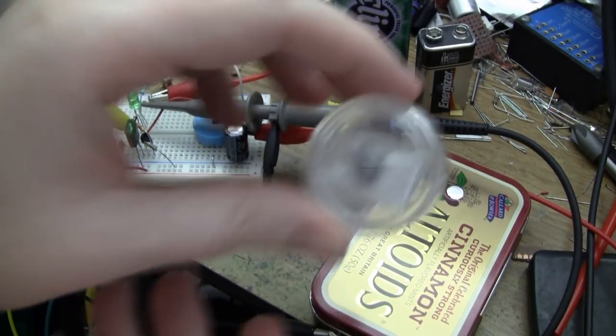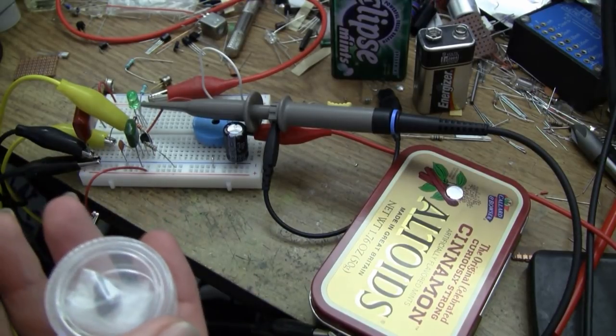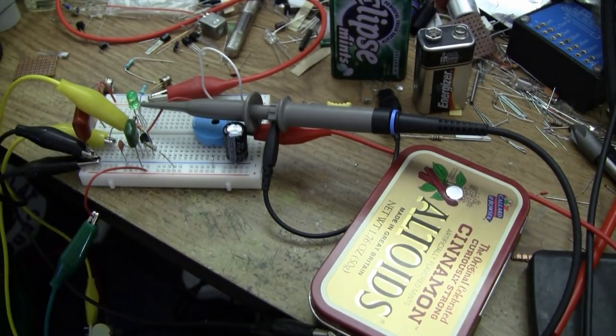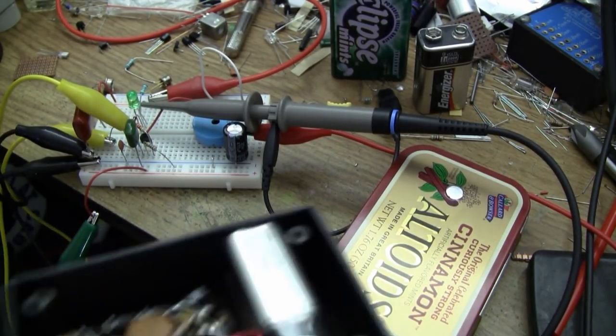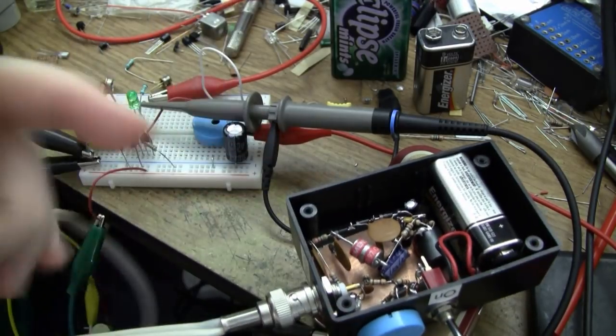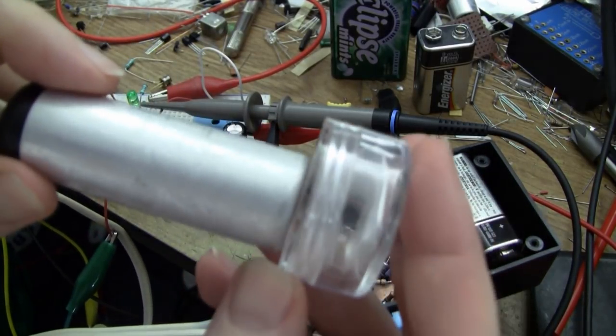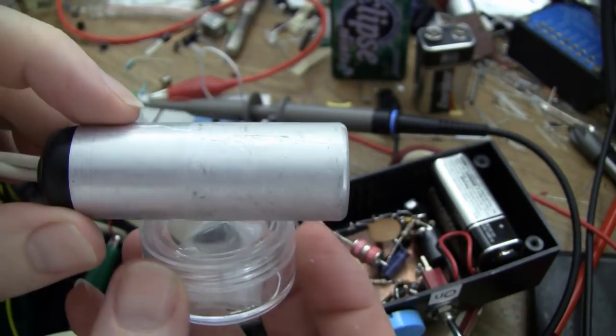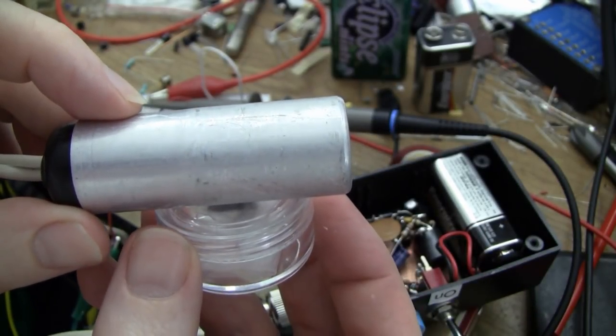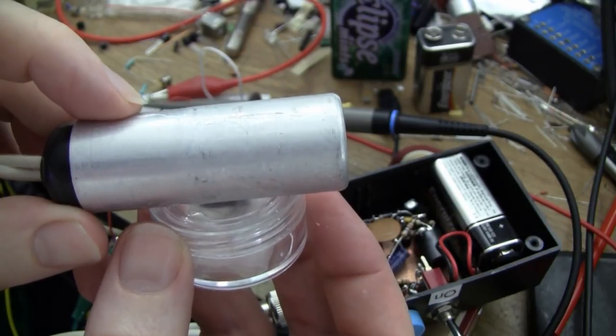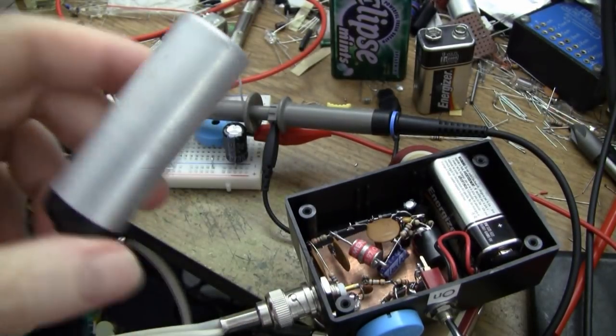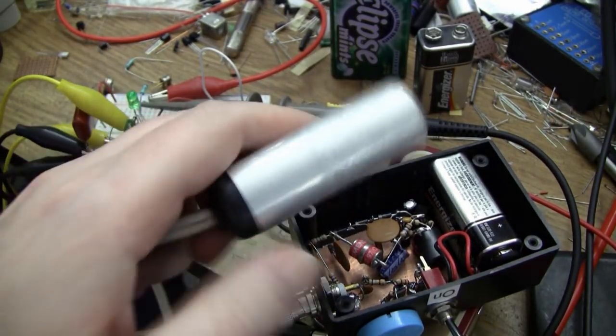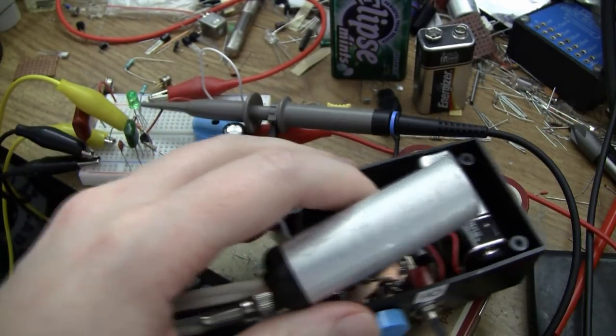For comparison purposes, let's have a look at it with an end window Geiger tube. That's not terribly surprising. A Geiger detector is quite a bit more sensitive than the solid state detector.